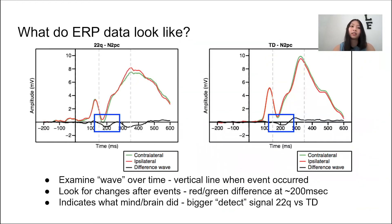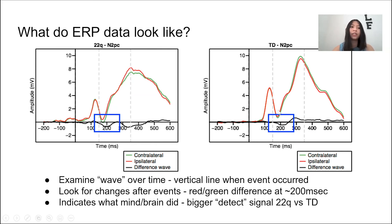These are some examples of what ERP data looks like. As you can see, they're much more isolated and clear than EEGs. On the left, we have ERP data from a 22Q teen, and on the right, we have ERP data from a typically developing teen. We follow the wave or signal over time — the vertical line is when the event occurred and then we look for changes after the event. We're focused on the signal at the 200 millisecond zone, which is where we know the N2PC, a specific ERP component, occurs.